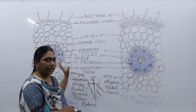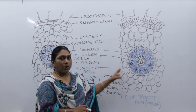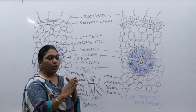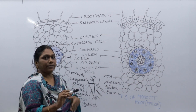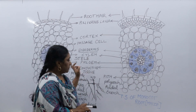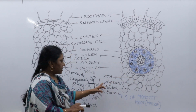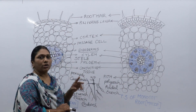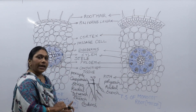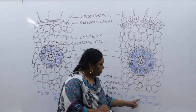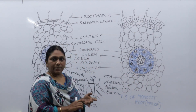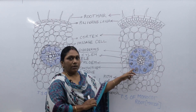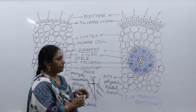Comparing dicot and monocot root side by side helps you remember. In dicot root it is tetraarch xylem; in monocot root it is polyarch. Both are radial and exarch arrangements. The conjunctive tissue — the tissue between xylem and phloem — is parenchyma in dicot root but sclerenchyma in monocot root.